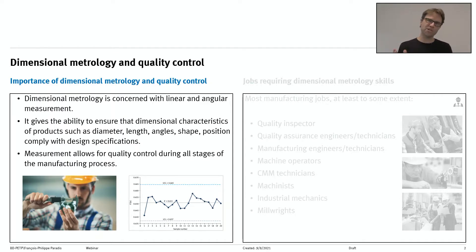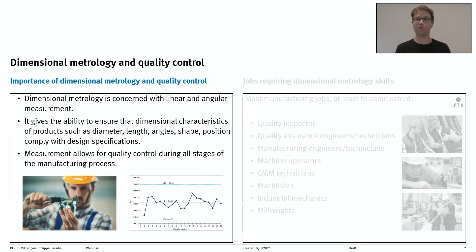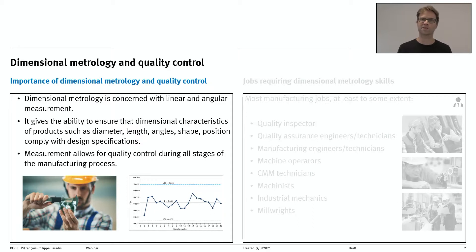Once you have these measurements, if you have a process that repeats the same part in the same product all over again — like millions of them — the data you get from dimensional measurement will allow you to perform quality control during various stages of the manufacturing process, using tools such as statistical process control.